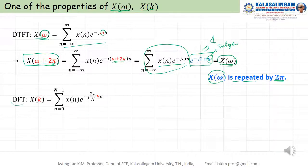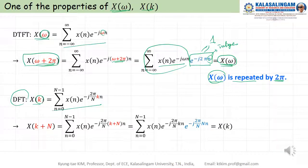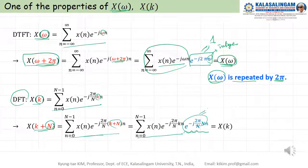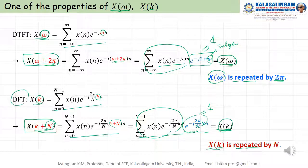Similarly, for the discrete Fourier transform X of k, we substitute k with k plus N. Expanding, the N in the exponent cancels, giving a factor of 1. Therefore, X(k + N) equals X(k) — X of k is repeated with period N. This means X of k is also periodic with a period of N.